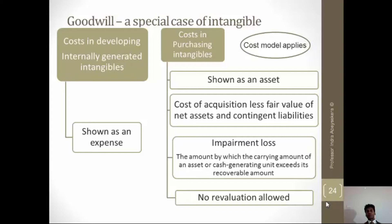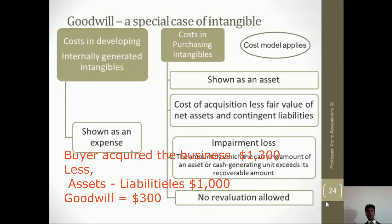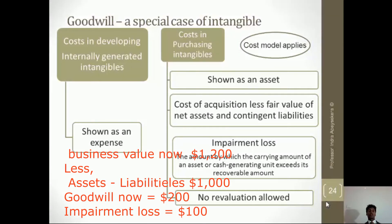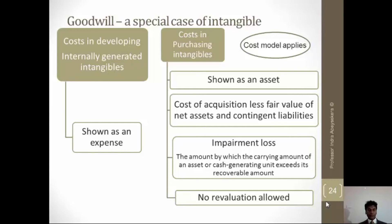For example, let's say the buyer paid $1,300 to acquire the company, and its assets less liabilities equal $1,000. So $300 is for the goodwill. Next year, it values the company that it bought and its worth is $1,200, but the assets and liabilities equal $1,000. So the total value is $1,200 and the excess is $200, not $300. So the impairment loss is $100 because that $300 has become $200. The decrease in value of the goodwill becomes $100, and that becomes an impairment loss and expense.